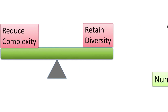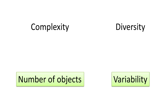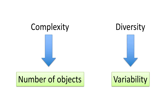I want to see the thousand objects as three representative clusters, but I want these three clusters to reflect a good deal of the diversity that exists in the thousand objects. Complexity reflects how many objects you have — a thousand objects is complex to think about. Diversity is related to how much variability exists within the set of objects; objects that are quite different from each other represent diversity.